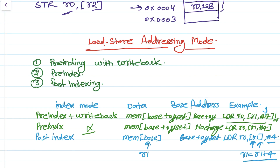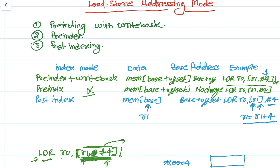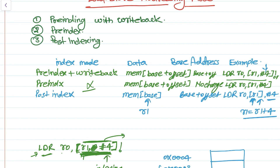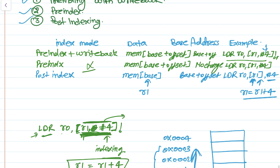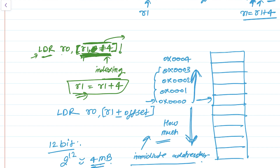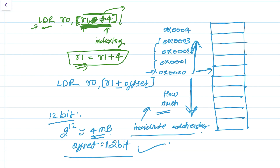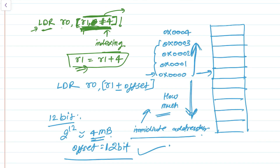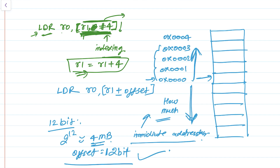In this tutorial we learned about load/store addressing modes, covering the three types of indexing modes with examples, and we also discussed how far the offset can jump in the forward and backward directions. Thank you so much for watching this video — please do not forget to subscribe.